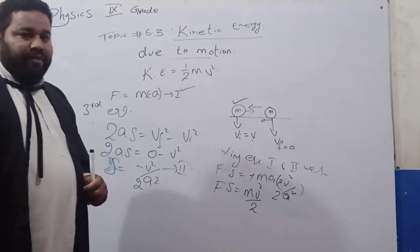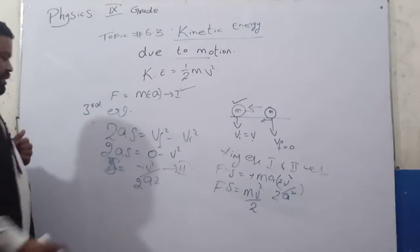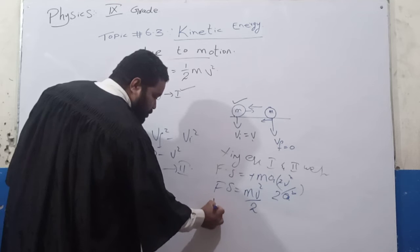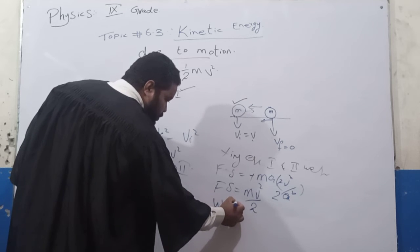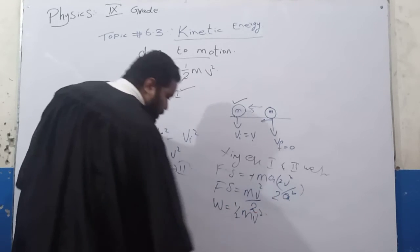Now what is Fs? The product of force and displacement is work. So work is equal to 1 by 2 mv squared.